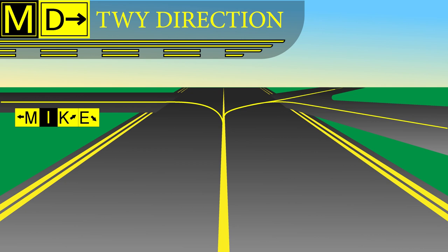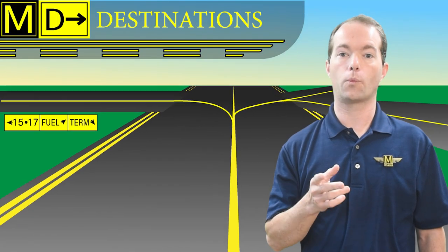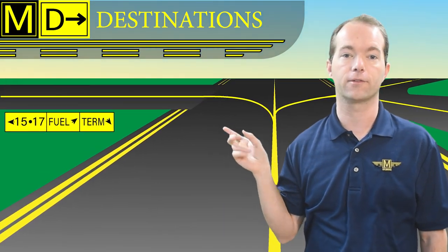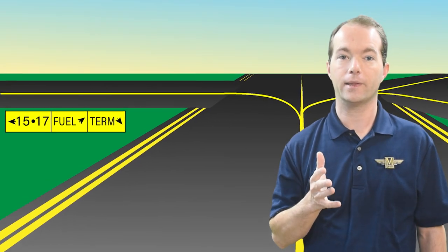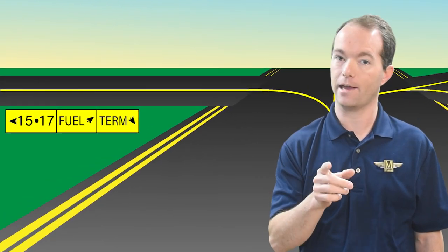You might also see other things listed, like runway directions or FBO locations on these signs. If you see a dot between letters or numbers on a direction sign, it reads like an AND sign — so don't sit there trying to multiply 17 and 15. Just go that way to get to either of those runways.